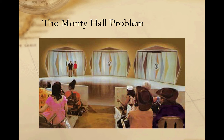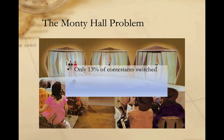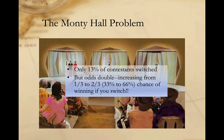This problem was first published in the New York Times, and when it was, it stumped a lot of well-educated people, including many mathematicians. A study of the show revealed that only 13% of contestants actually made the switch when given the option to change their door after a losing door was revealed. But you should always switch when given the choice, because your odds of winning increase from one in three to two in three — that is, from 33% to 66% — when you switch.